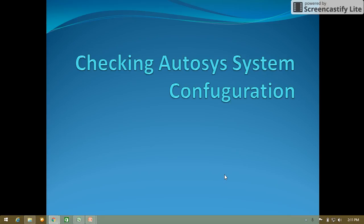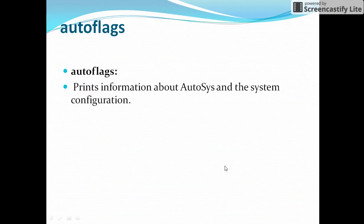Hi friends, today we will check one of the commands to check autosys system configuration. The command is autoflags. With the autoflags command, we will get information about the system configuration of the autosys server. Autoflags prints information about autosys and the system configuration. There are a few options which need to be used along with the autoflags command.